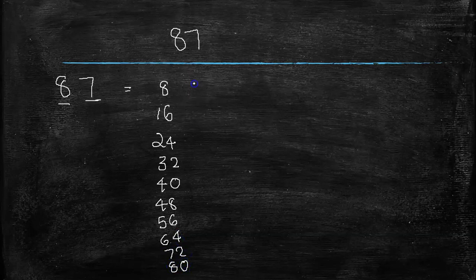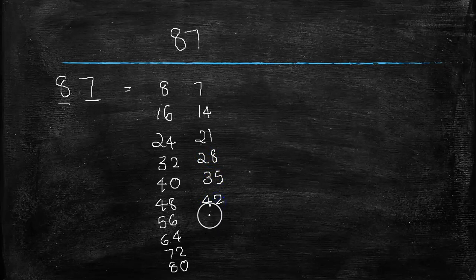Similarly here, I have to write 7 times table. 1 times 7 is 7, 2 times 7 is 14, 3 times 7 is 21, 4 times 7 is 28, 5 times 7 is 35, 6 times 7 is 42, 7 times 7 is 49, 8 times 7 is 56, 9 times 7 is 63, then 10 times 7 is 70.